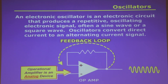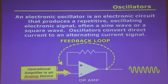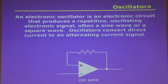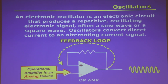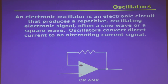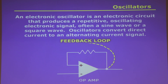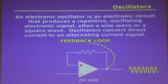This is a solid-state oscillator, an operational amplifier, an analog device. What you do is take some of the output, feed it back to the input, and it oscillates over and over again. An oscillator uses a feedback loop — some method of feeding some of the information it generates back to the input.